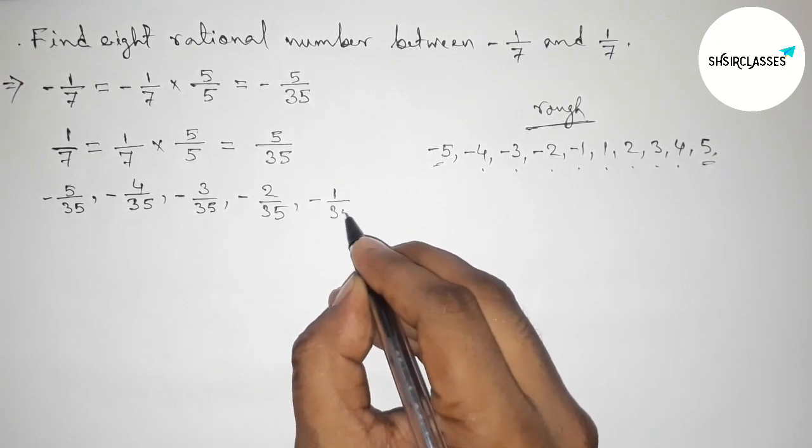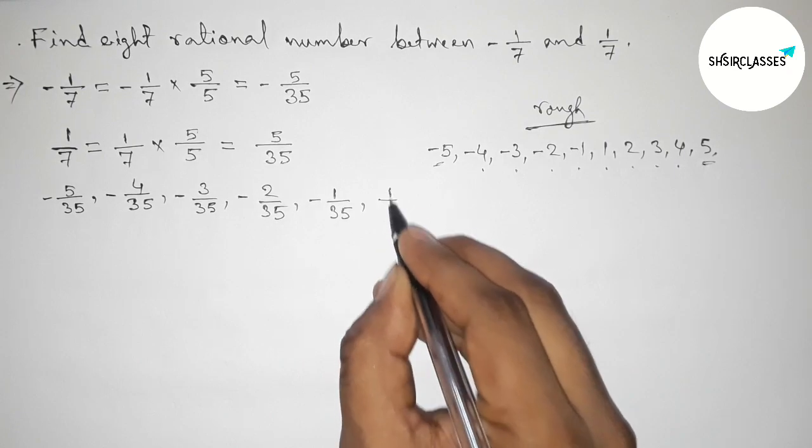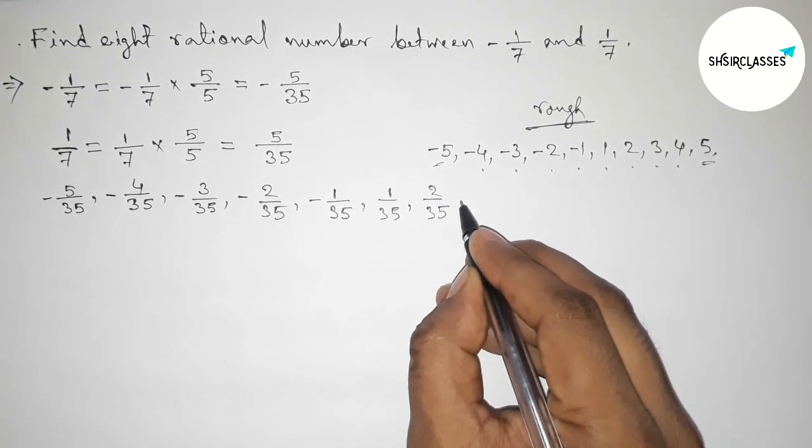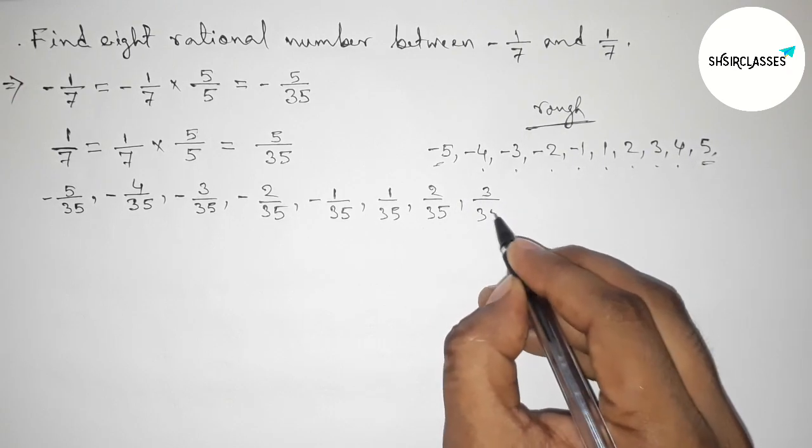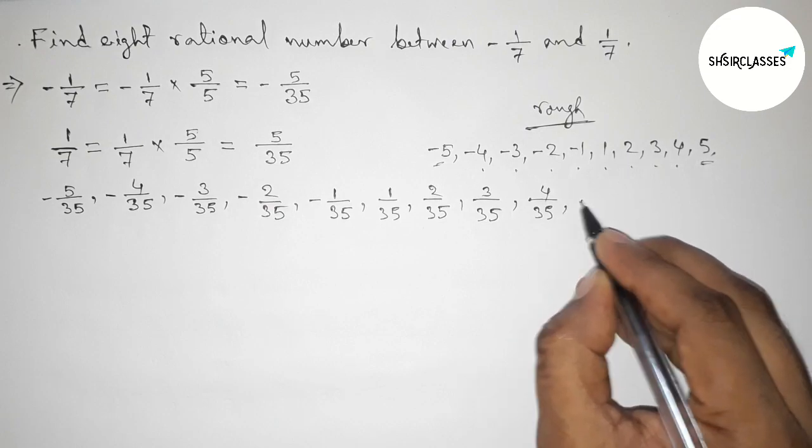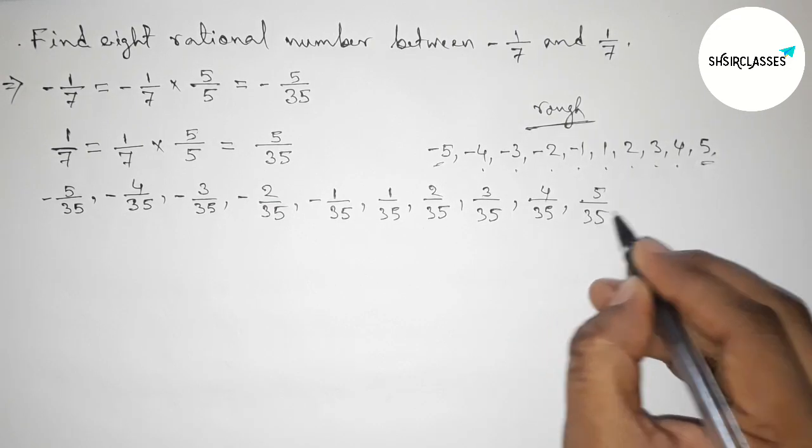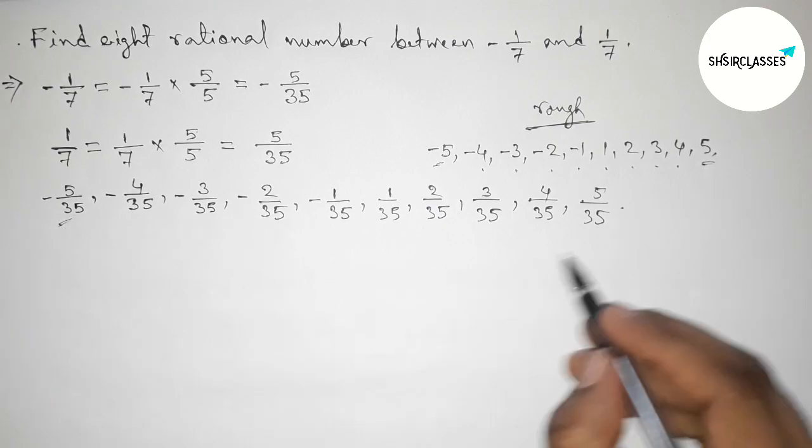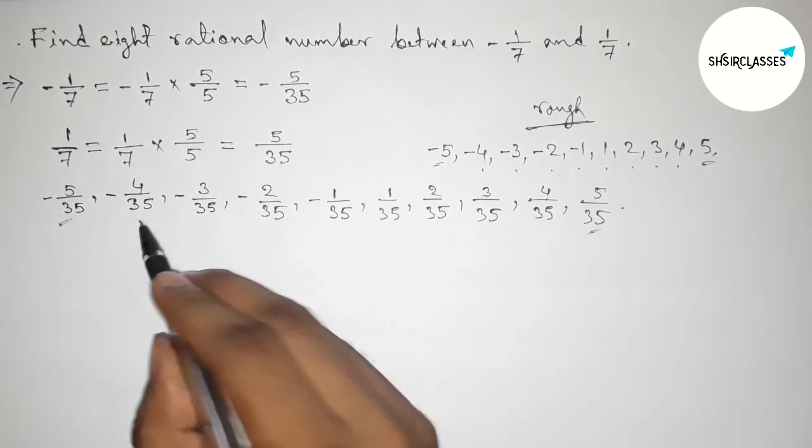then -1/35, next 1/35, 2/35, then 3/35, next 4/35, and last one is 5/35. So here, between these, we can